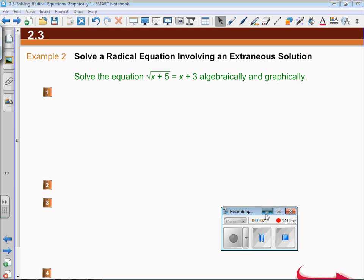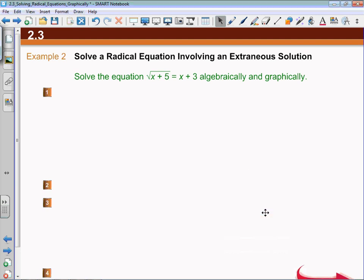Example two is a bit more complex. It's going to require us to solve a quadratic when we get through a couple steps. Right away, as soon as I see that variable inside the radicand, I'm going to identify that x plus 5 must be greater than or equal to 0, which means that x must be greater than or equal to negative 5.